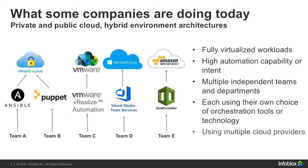What most companies are doing today is moving and shifting their workloads into public and perhaps even private cloud environments. This allows them to virtualize their workloads, and by doing so, provides them with the ability to automate. They also have independent teams running with their own choice of orchestration tools or technologies, providing them with the flexibility to use different cloud providers. Their financial model has now transformed into a software-as-a-service or an operational expense-driven financial model.